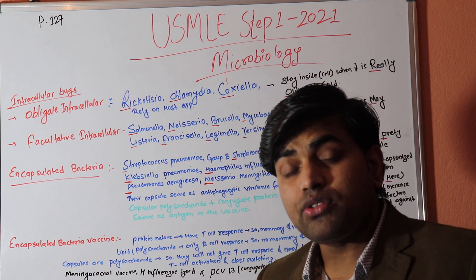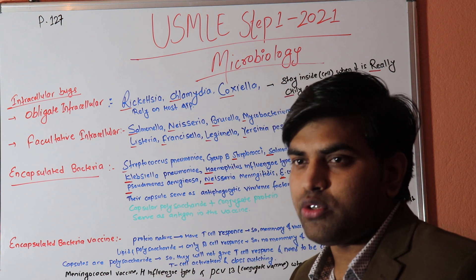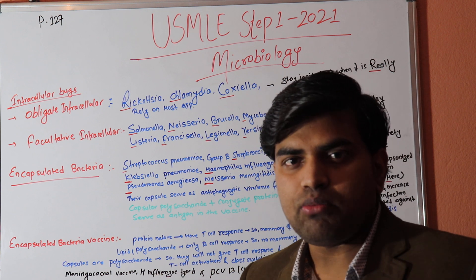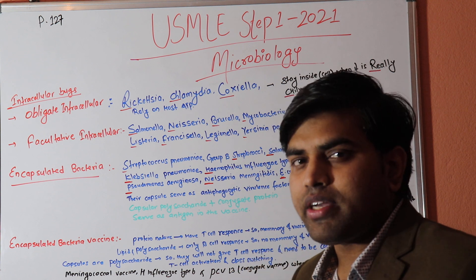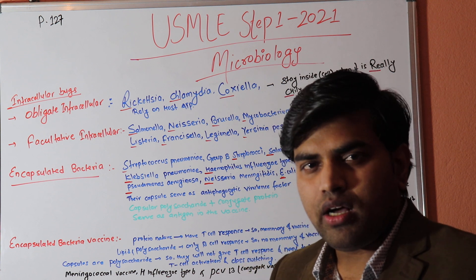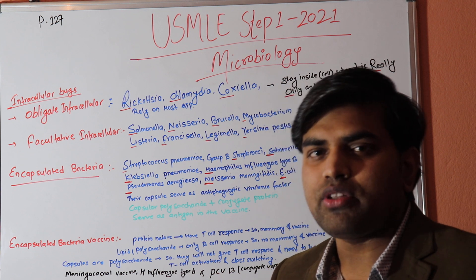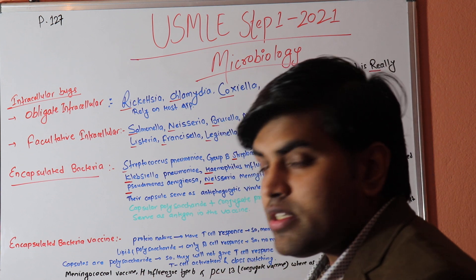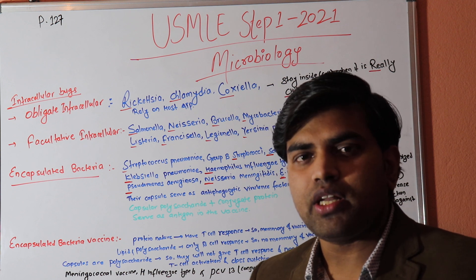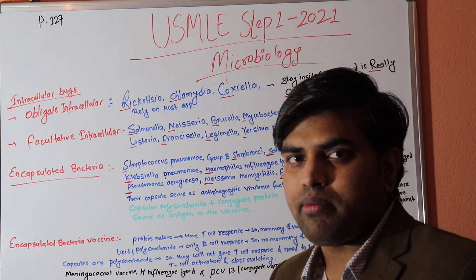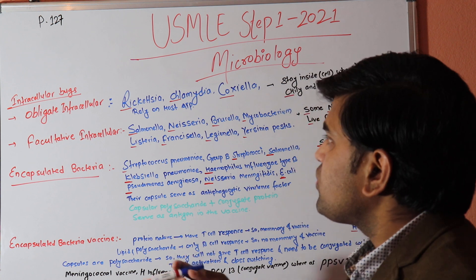We'll also talk about the sequential vaccine for the pneumococcal vaccine. Pneumococcal pneumonia is the most common cause of community-acquired pneumonia. We'll cover vaccination options for all people — children, infants, the elderly — and for transplant patients or similar conditions.